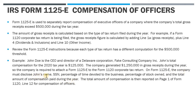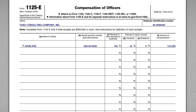On Form 1125-E, the company has to disclose a couple of things: John's name, his social security number, the percentage of time he works for the company, how much stock he owns, and his total compensation. The total amount of compensation is then reported on page 1 of Form 1120, line 12, as compensation for officers. The form itself is relatively straightforward — we're just listing each officer's information and the amount of compensation.